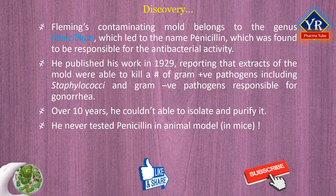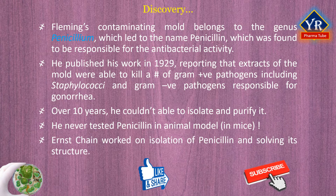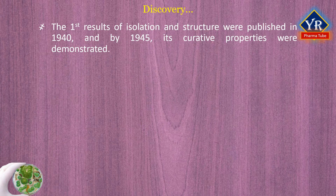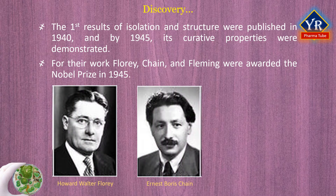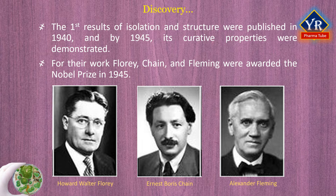He never tested it in a model infection in mice. Meanwhile, Ernest Chain, working as part of Howard Florey's team at Oxford, had taken on the task of isolating penicillin and solving its structure. The first results of this effort were published in 1940, and by 1945, penicillin had demonstrated its amazing curative properties in the clinic and was being produced and distributed on a large scale. For their seminal work, Florey, Chain, and Fleming were awarded the Nobel Prize in 1945.